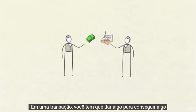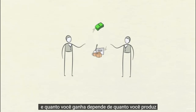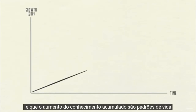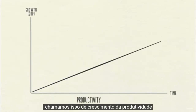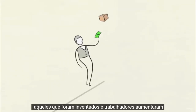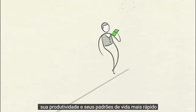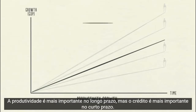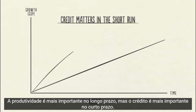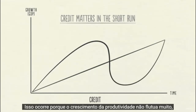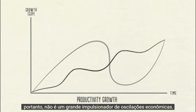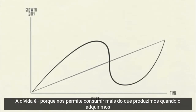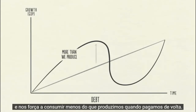In a transaction, you have to give something in order to get something, and how much you get depends on how much you produce. Over time, we learn, and that accumulated knowledge raises our living standards. We call this productivity growth. Those who are inventive and hardworking raise their productivity and their living standards faster than those who are complacent and lazy. But that isn't necessarily true over the short run. Productivity matters most in the long run, but credit matters most in the short run. This is because productivity growth doesn't fluctuate much, so it's not a big driver of economic swings. Debt is, because it allows us to consume more than we produce when we acquire it, and it forces us to consume less than we produce when we have to pay it back.